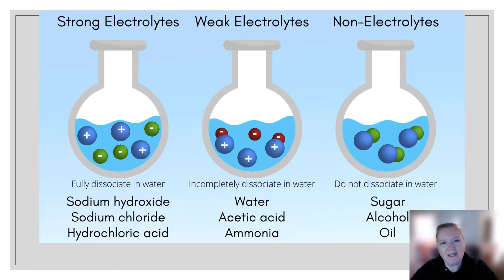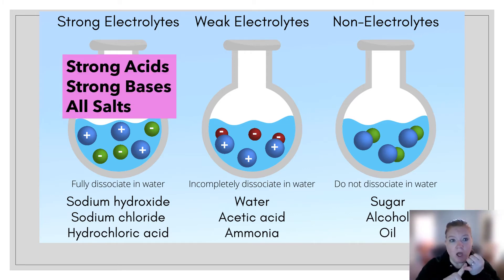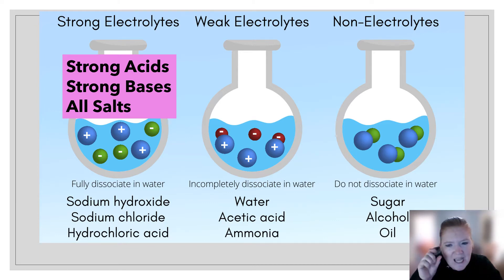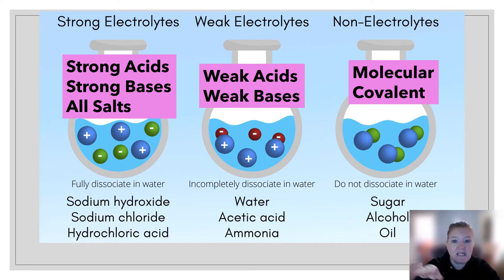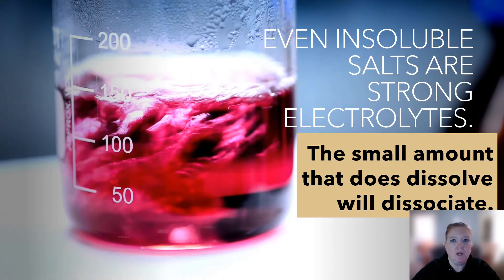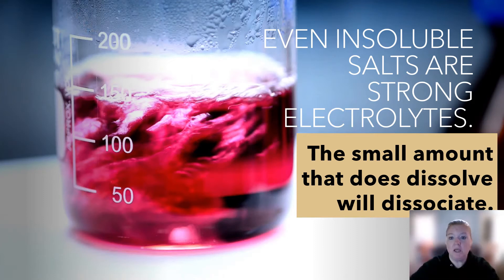We can have strong electrolytes, weak electrolytes, and non-electrolytes. A strong electrolyte would be a strong base, a strong acid, or every single salt — it doesn't matter if the salt is soluble in water or not, because that little bit that dissolves will make it an electrolyte. A weak electrolyte is a weak acid or a weak base. A non-electrolyte is anything that is covalent or molecular. Even insoluble salts from Table F are strong electrolytes because the small amount that dissolves will dissociate.